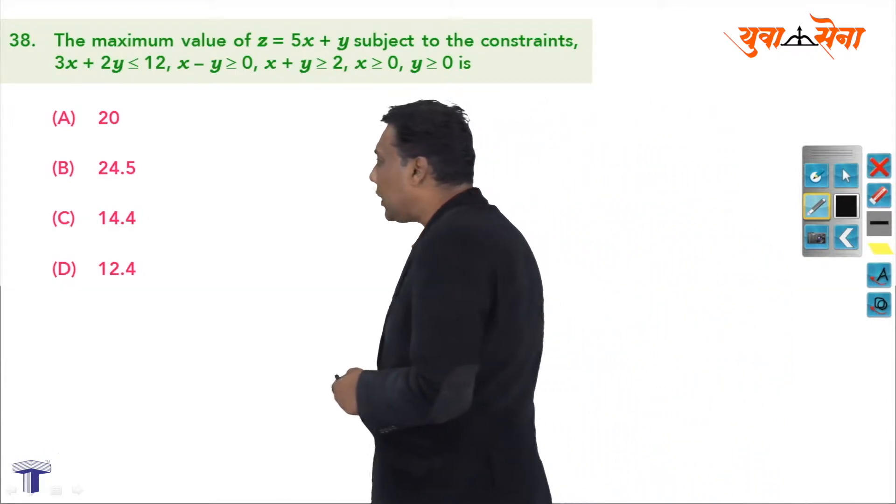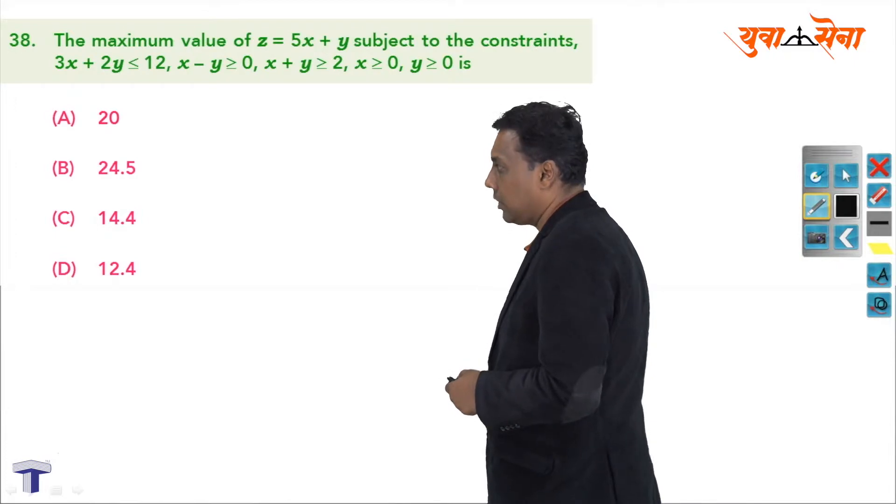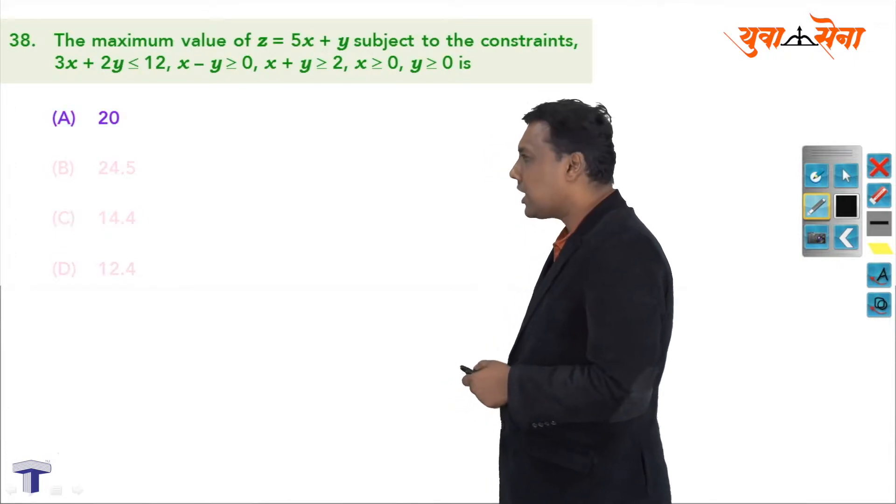Options given are 20, 24.5, 14.4, 12.4. The correct option is supposed to be A, which we will check.